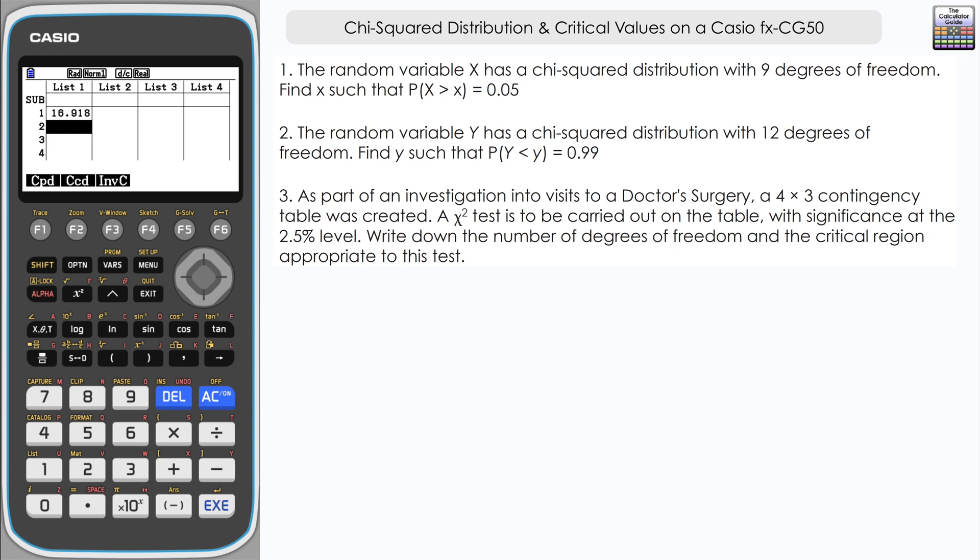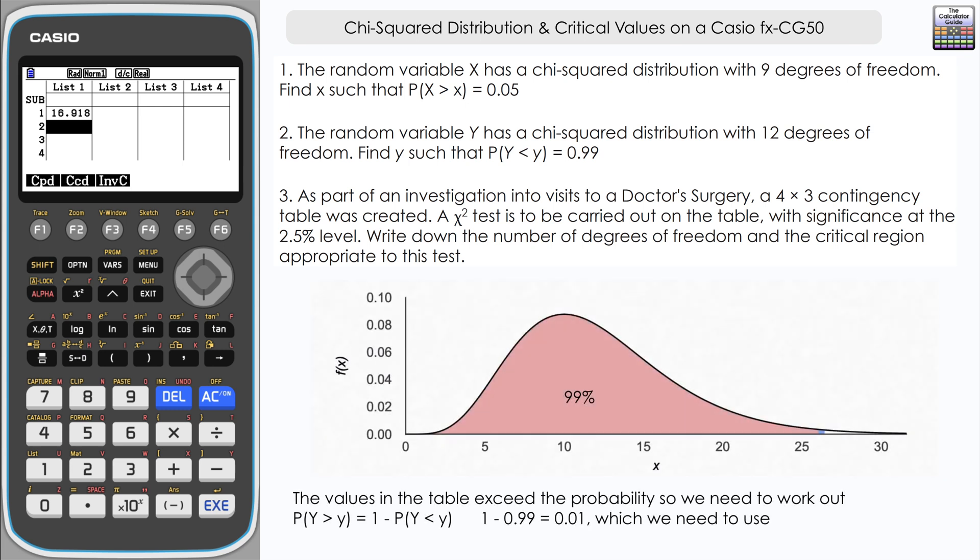But what we can do is we can think about the value that, if we're trying to find something where the probability of it being less than is 0.99, well we know conversely that the probability of it being greater than that is 0.01, or 1 percent.